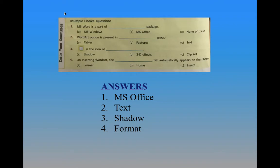Let us solve the MCQ on page number 34. The first question: MS Word is a part of dash package. The answer is B — MS Office. The second question: Word Art option is present in dash group. The answer is C — Text group.